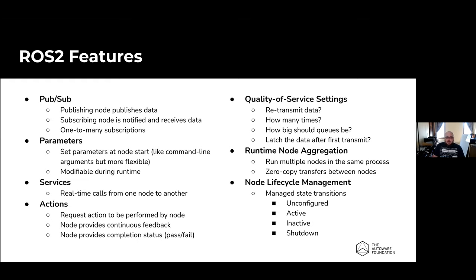Another feature ROS2 offers is called services. PubSub is a publish architecture for sending data to other nodes. Services are where you directly connect from one node to another and make a request of the node that hosts the service. For example, if you are recording a set of waypoints and want them saved, you can set up a service on that node that you can call at any time - provide the file path, the service runs, saves the waypoints, and returns a status saying whether it succeeded or failed.